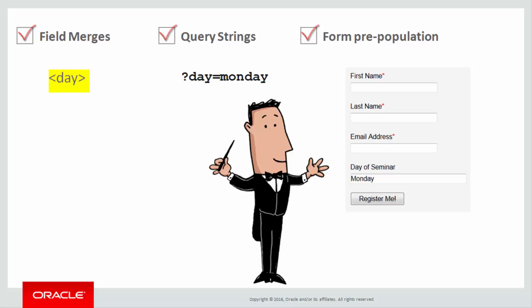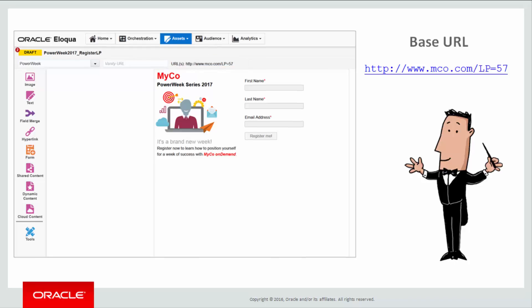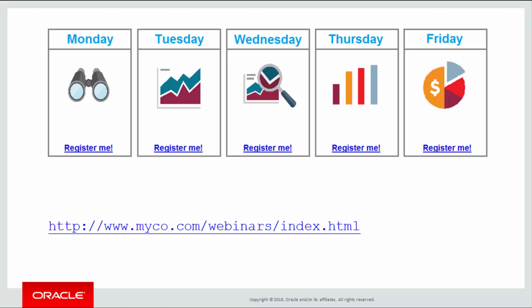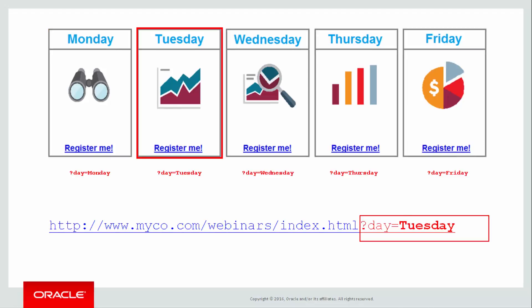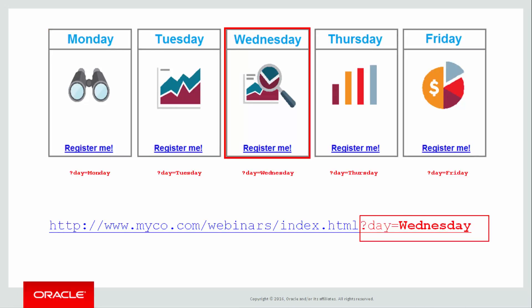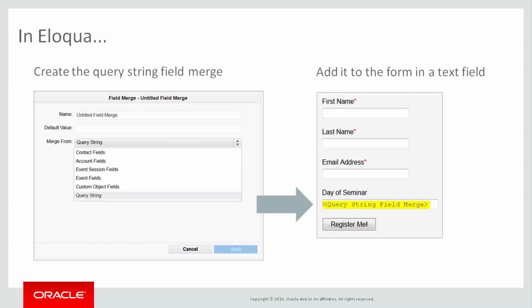Here's what they did at Myco. They used one registration landing page and used the landing page URL as the base URL for the hyperlinks in their PowerWeek registration email. However, they added unique query strings to each of the hyperlink URLs. All that was left to do was to create the field merge in Eloqua and place it on the registration landing page form.